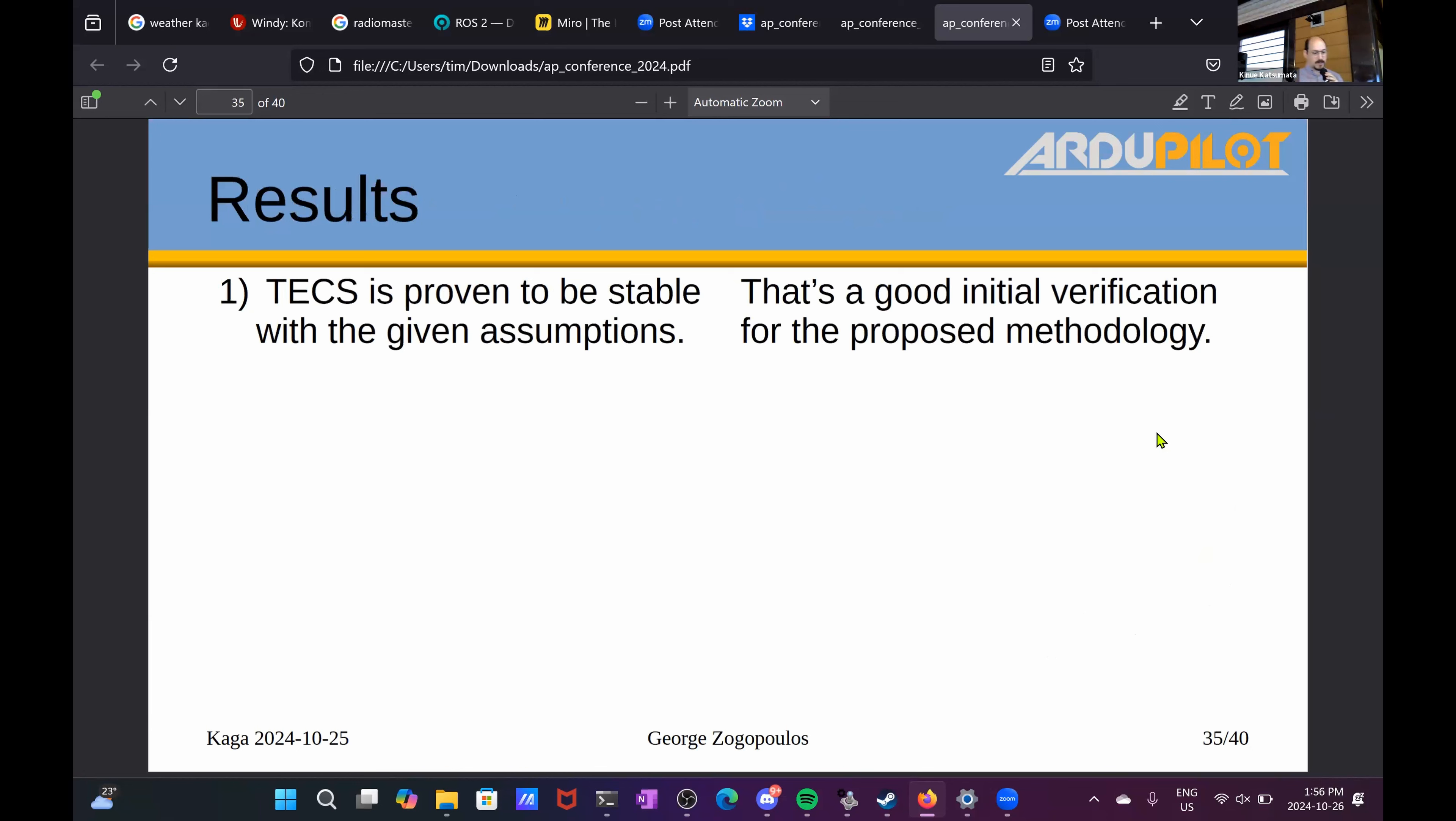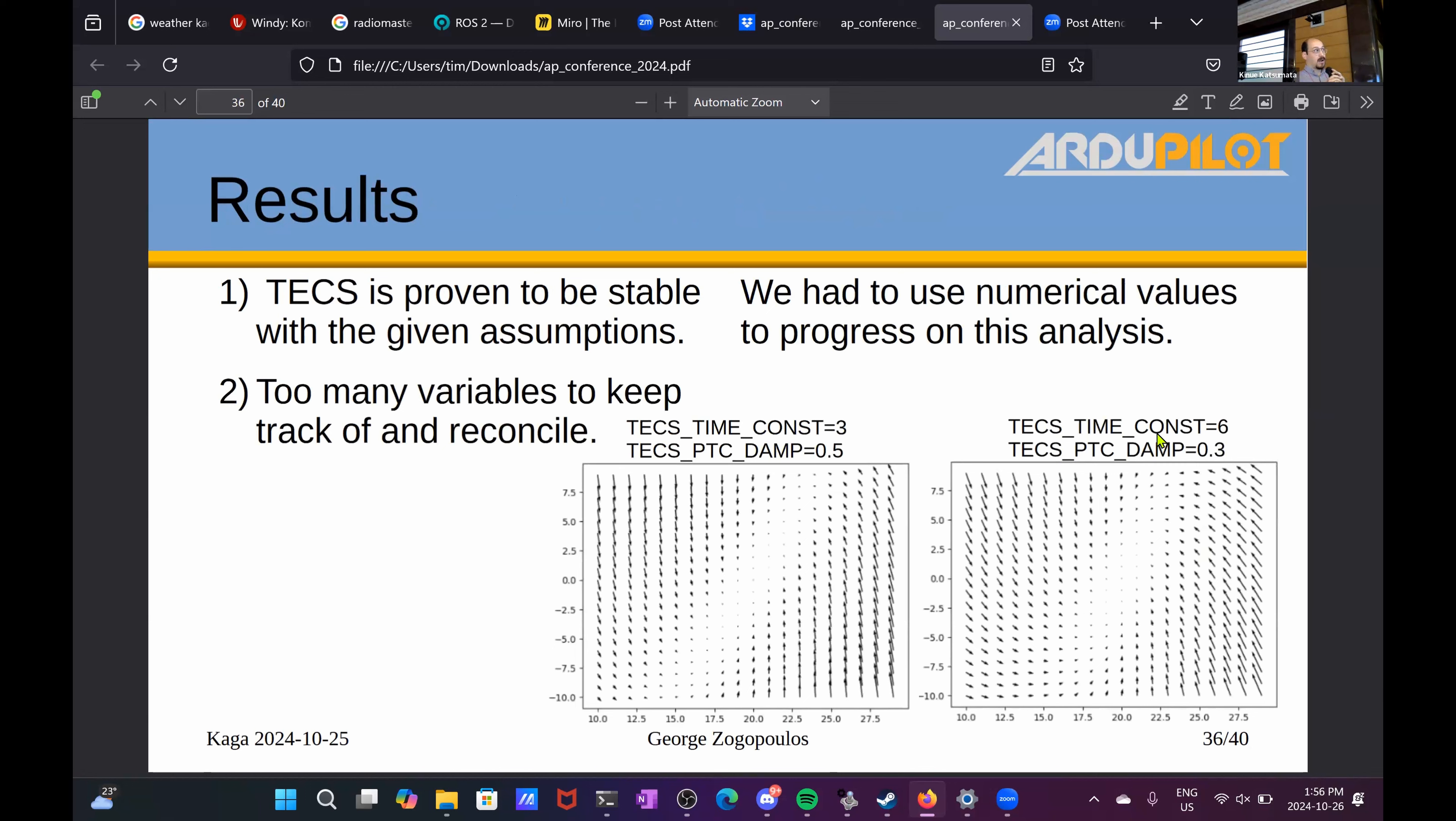So what results can we draw from this? Yes, we have just shown that under some numerical values, TECS is stable. It closes a stable loop, and that's a good initial verification for the proposed methodology. But as we saw, there are a lot of variables to move around and keep track of. The system was six or seven variables, TECS is another six or seven. And this amount of variables is too much to lug around in a mathematical derivation. So we had to use some numerical values to process this analysis and progress.